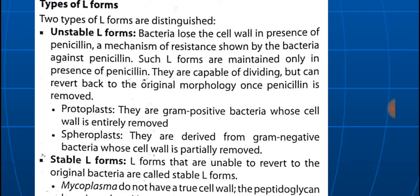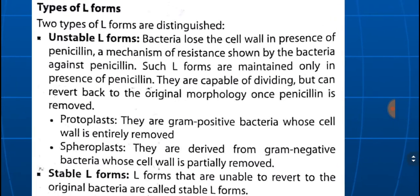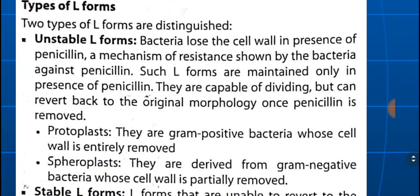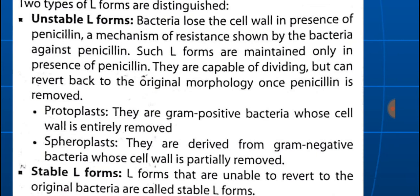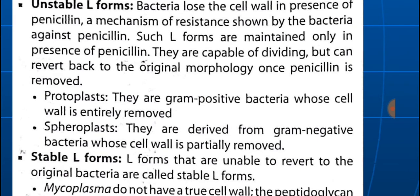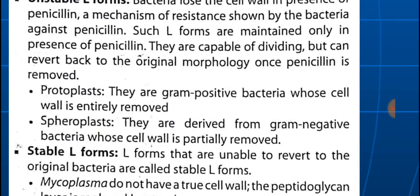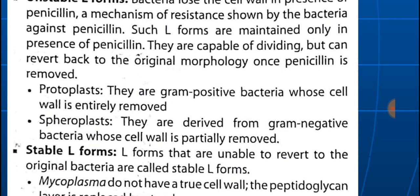Unstable L forms lose their cell wall in the presence of penicillin, but they are capable of growing and dividing despite losing the cell wall. They can revert back to the original morphology once penicillin is removed. Within unstable L forms, protoplasts are derived from Gram-positive bacteria whose cell wall is entirely removed, while spheroplasts are derived from Gram-negative bacteria whose cell wall is only partially removed.